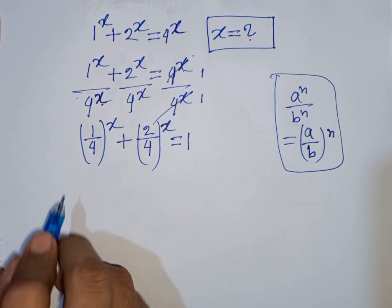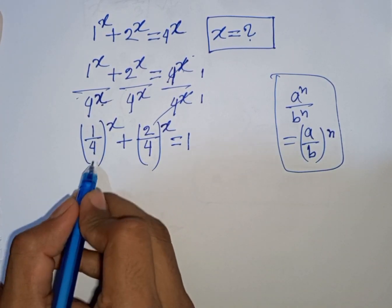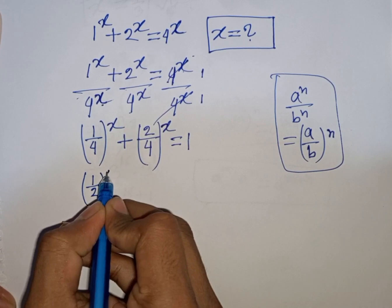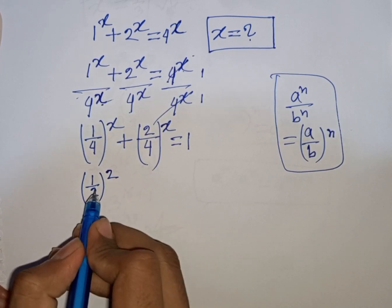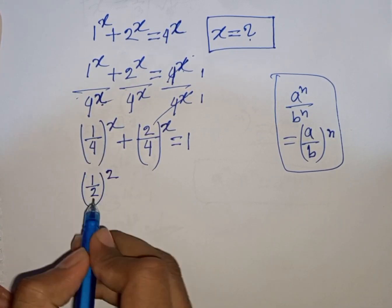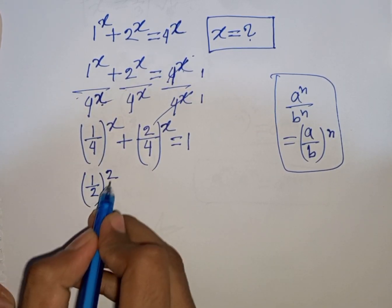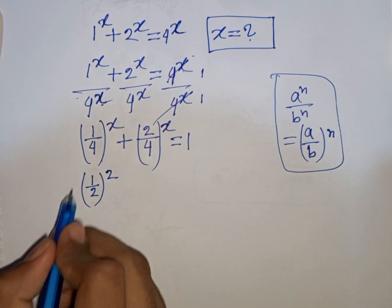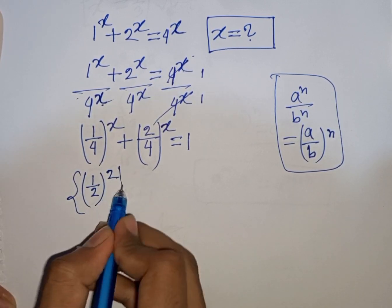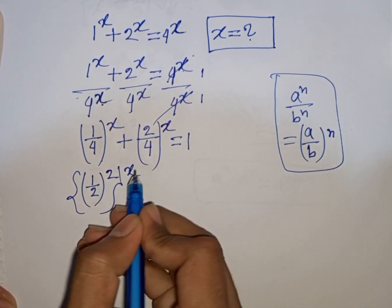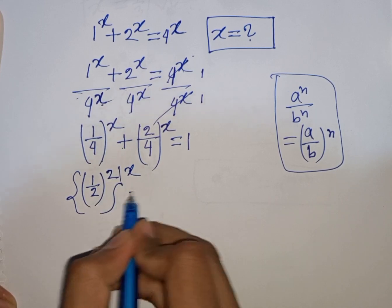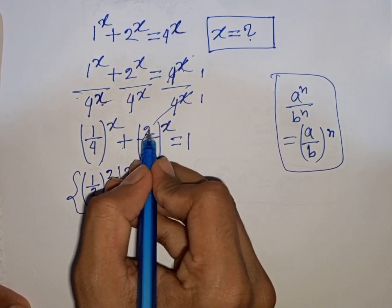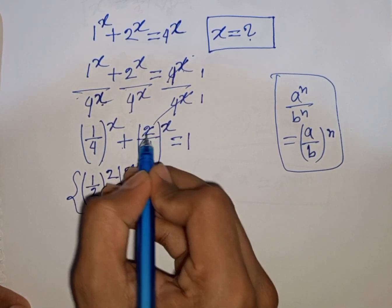Now 1 over 4 is the same as (1 over 2) bracket power 2 — that means 1 divided by 2 squared equals 4. So the first bracket becomes (1/2)^2 power x, plus 2 simplified by 2 means (2 over 4) simplifies to 1 over 2, giving (1/2) power x.